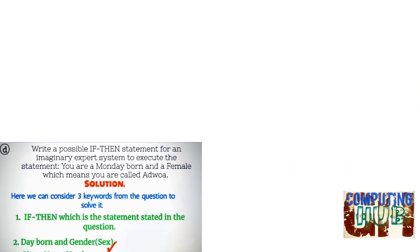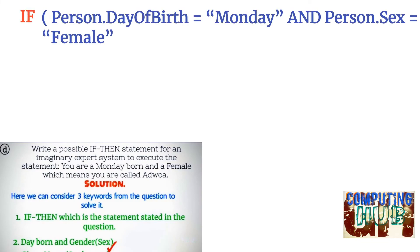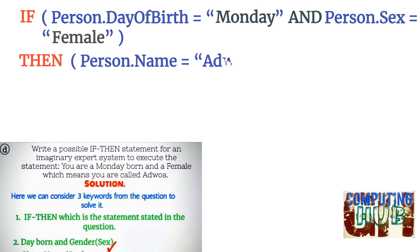Let me copy the question here again and write the code for it. We start with IF (Person.DayOfBirth = "Monday" AND Person.Sex = "Female"). After the if statement, THEN must come, because if the person day of birth is Monday and the person sex is female, THEN (Person.Name = "Adwoa"). This is the structure of the coding, how you are to write this statement.